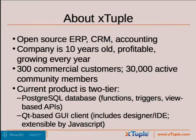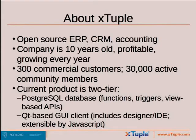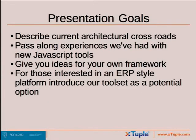We've got an open source project called Postbooks, and we think there's about 30,000 folks using that. Right now our product is two-tier. We've used Postgres exclusively since the inception of the company — that's the back end — and then we've got a classic desktop client front end built with Qt. Users have to install a client to get that to work, and you can do some extension with it currently with JavaScript. So that's a brief bit on who we are; we're making accounting systems and things like that.